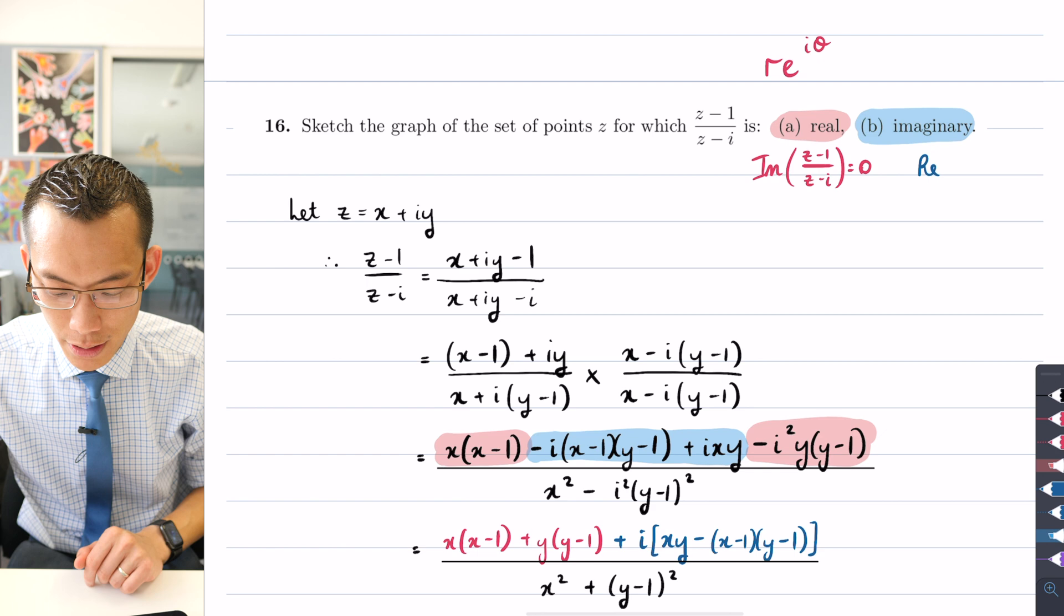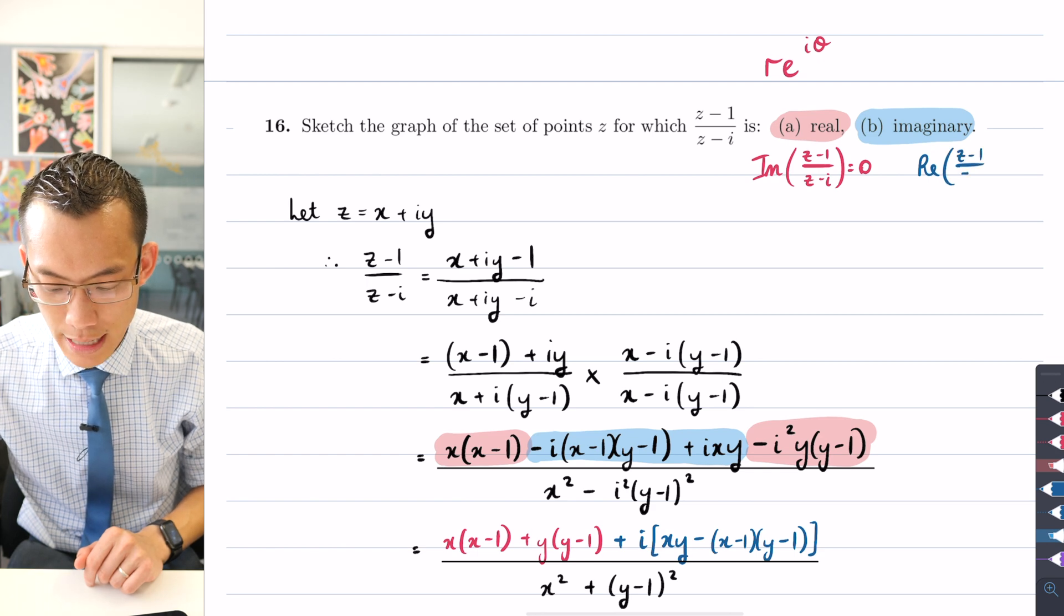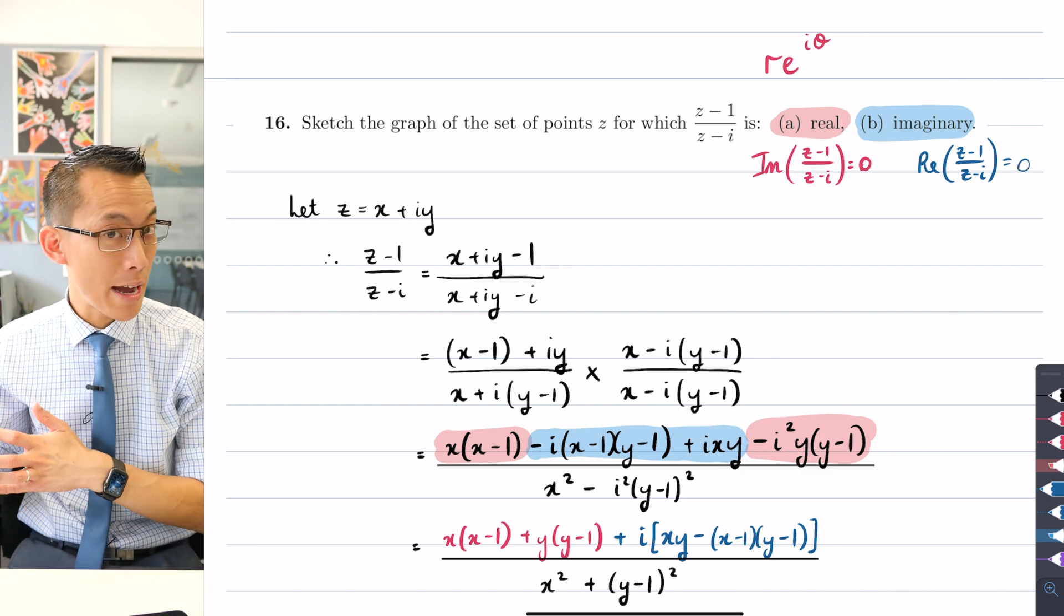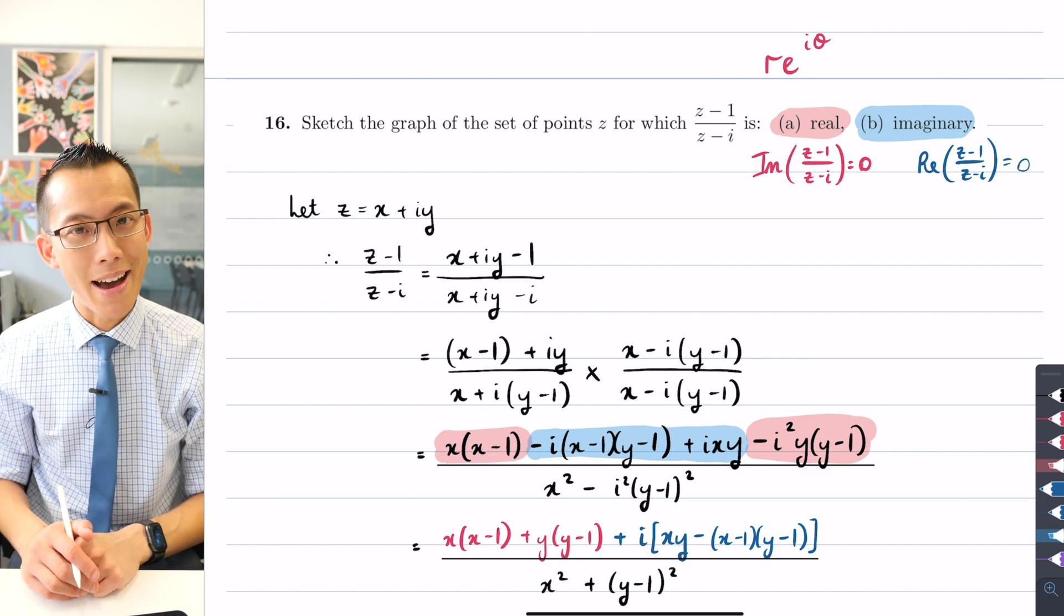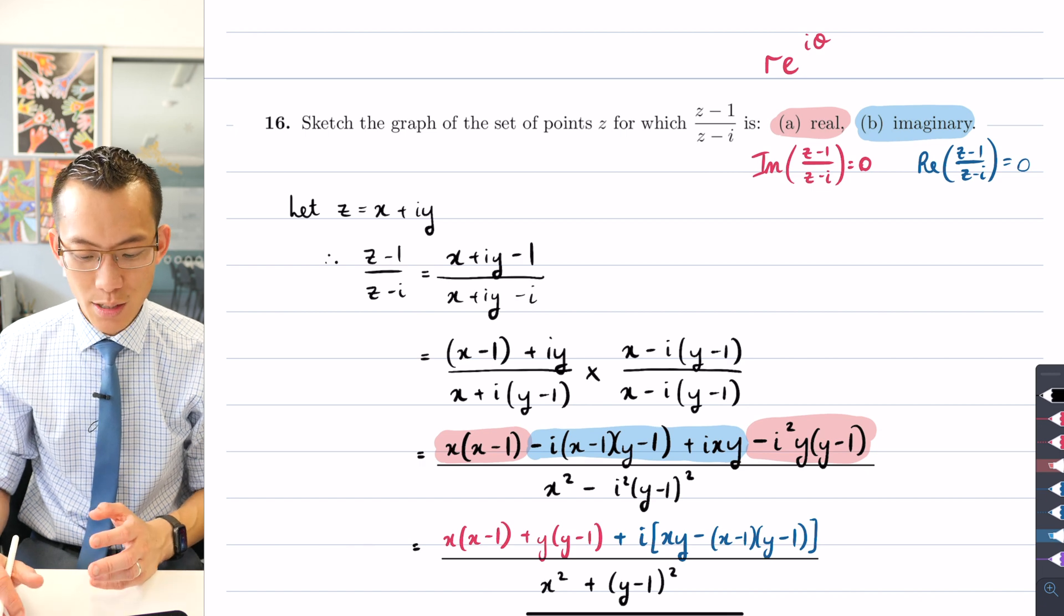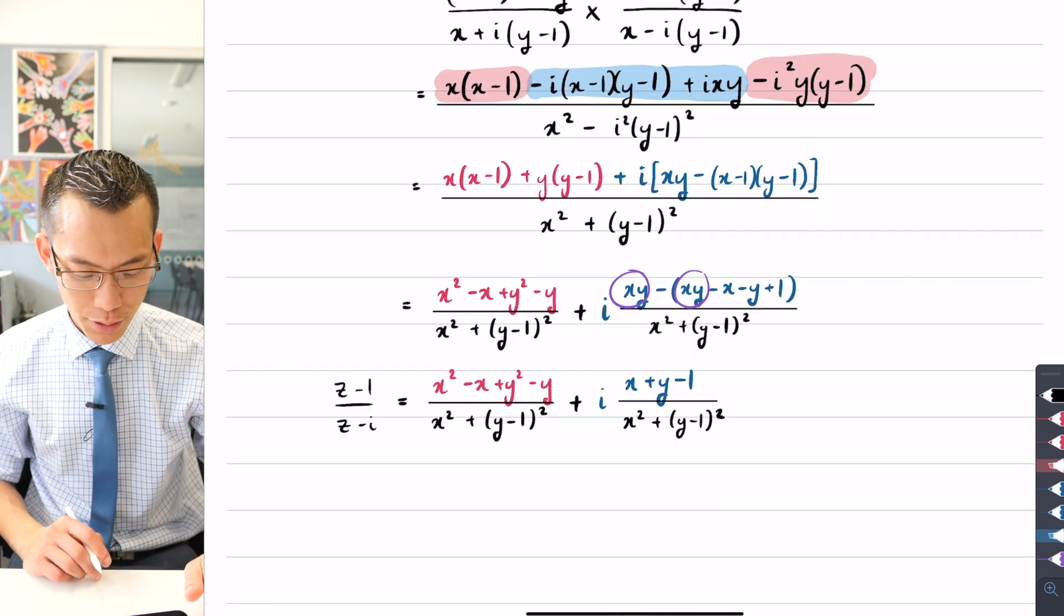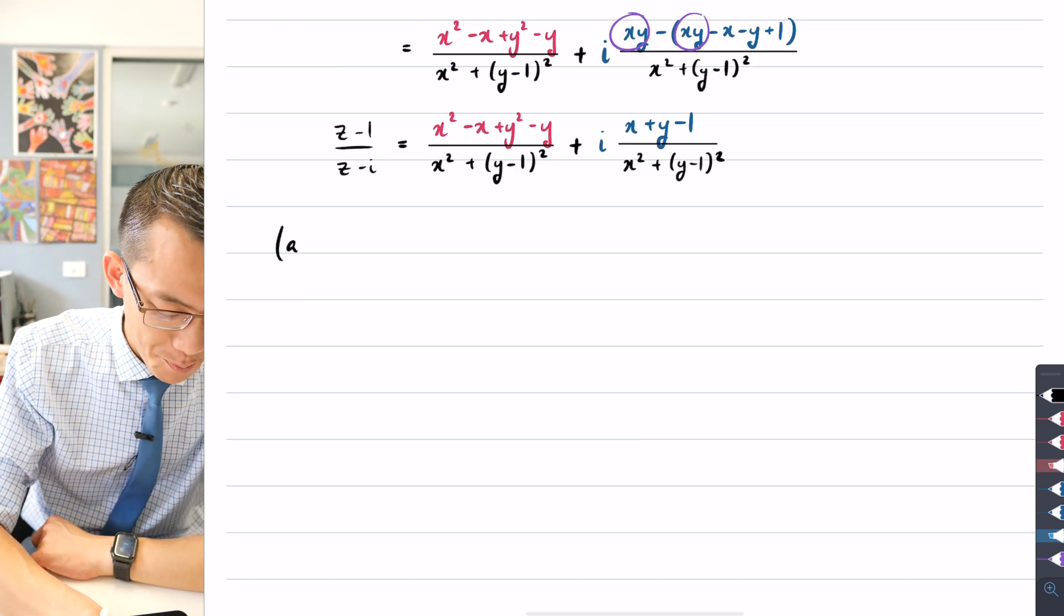By the same token, but using the opposite logic, if my real component of (z - 1)/(z - i), if that real component is zero, then in theory that should only leave an imaginary part. So this is going to be my framework, my pathway into solving part a and part b. But as you're about to see, you still need to be careful, so let's start to write our working.